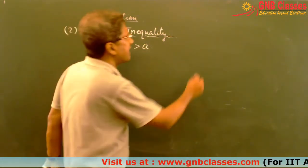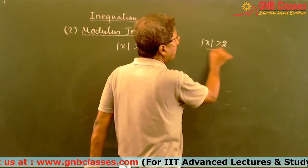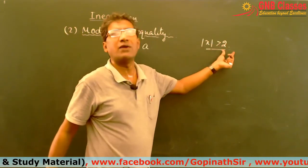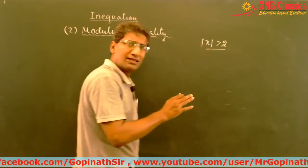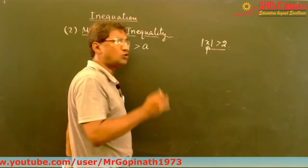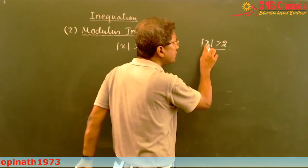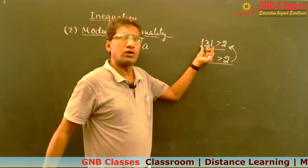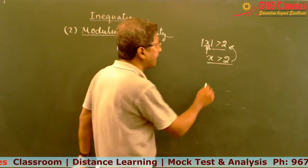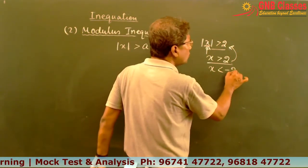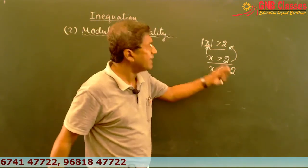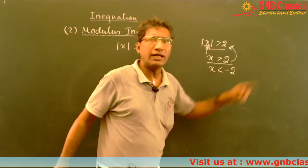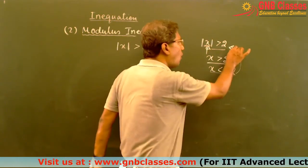Let us take an example: mod x is greater than 2. If you take any value of x which is more than 2, it will satisfy this inequality. At the same time, if you choose any value less than minus 2, it will also satisfy — because anything less than minus 2, if you take the mod of that, it will be more than 2. So x less than minus 2 will also satisfy this inequality.